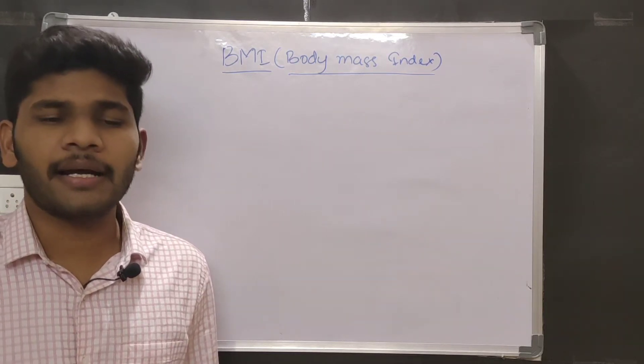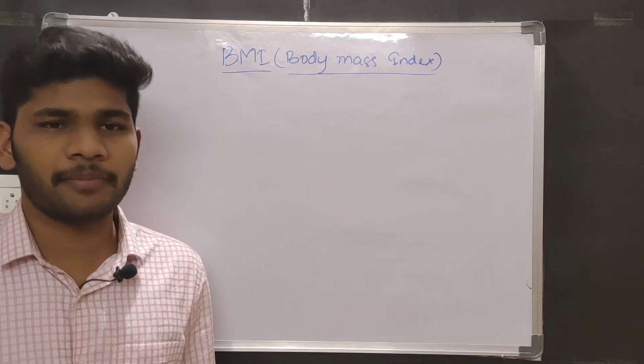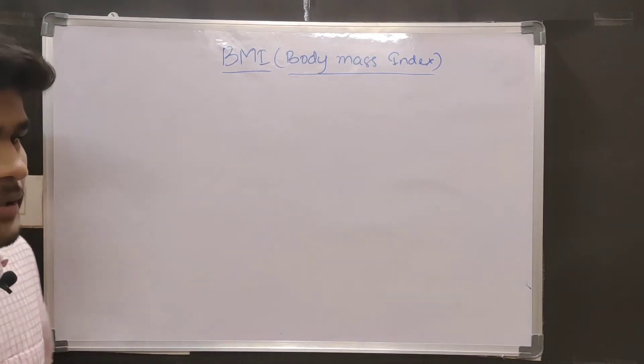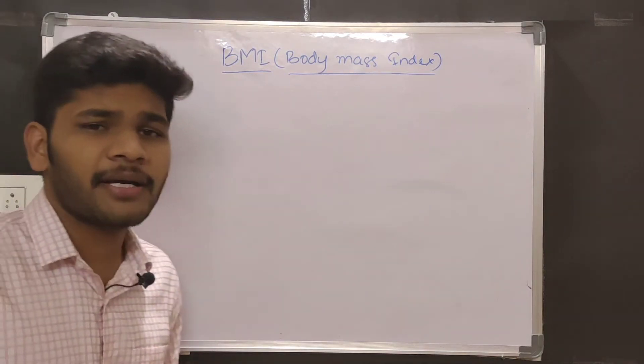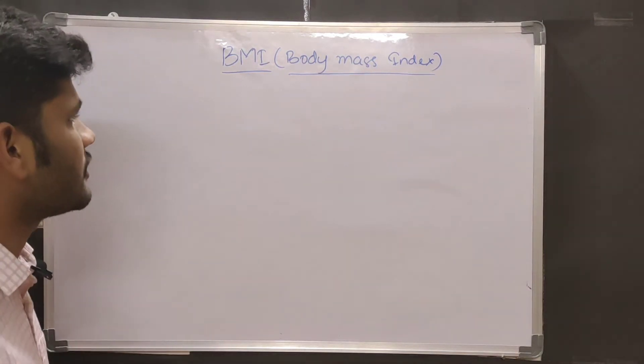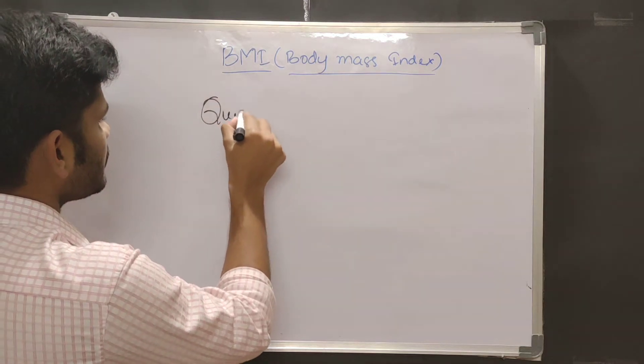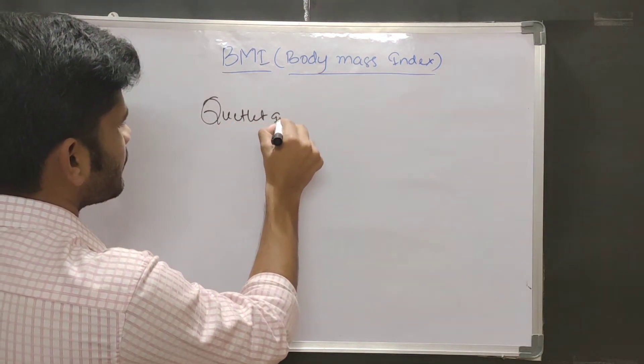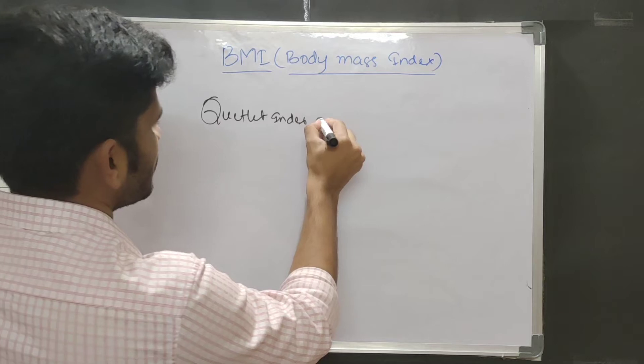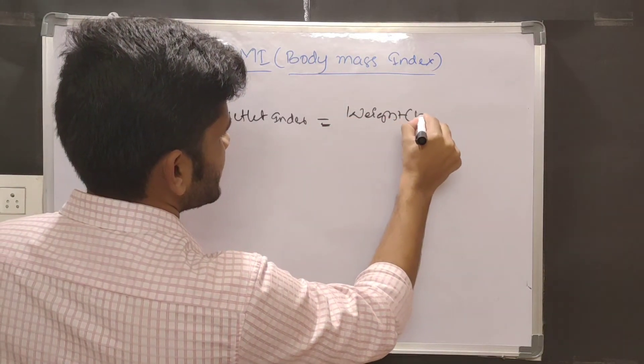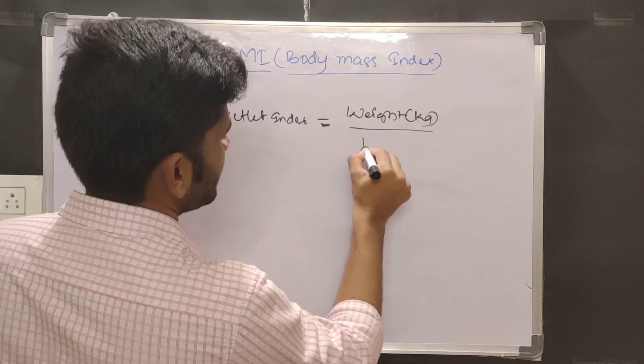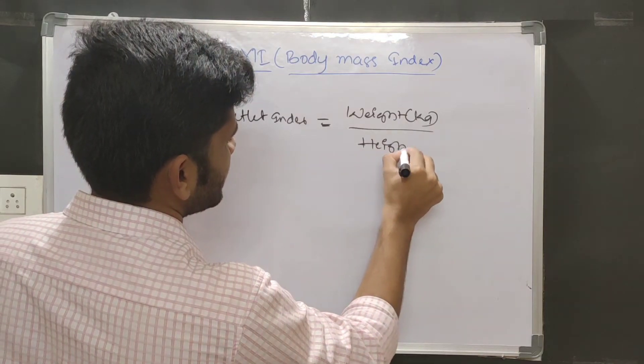And also it is an age independent parameter. So let me tell you how to calculate BMI. BMI is calculated with a formula called Quetelet index, which is weight in kg by height in meters whole square.